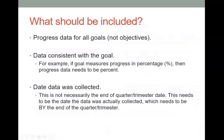Included on the progress reports would be data for all the goals. We do not progress report on the objectives — data must be consistent with the goals. So if you use a percentage, your progress data needs to be a percent; if you use trials, it would be trials, etc. Include the date the data was collected, which doesn't necessarily mean the end of the quarter or trimester date, but whatever date you actually collected the data, which should be by the end of that quarter or trimester.